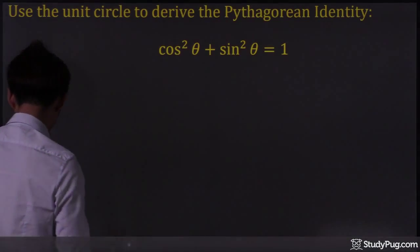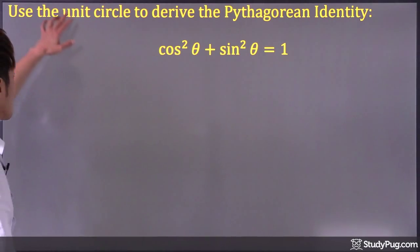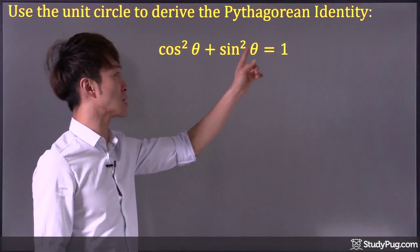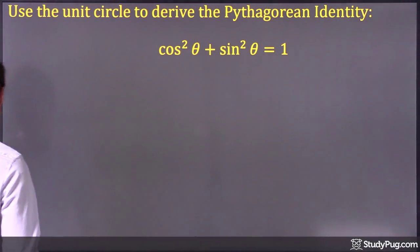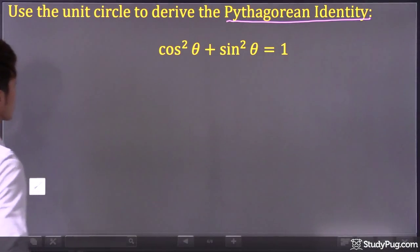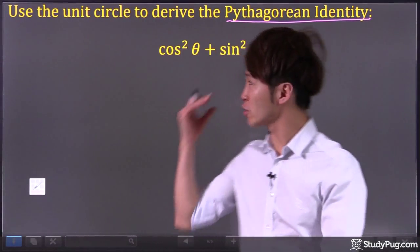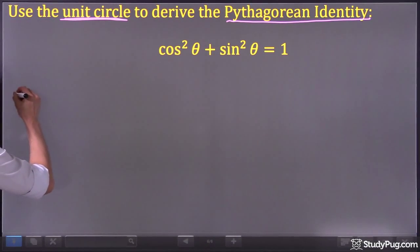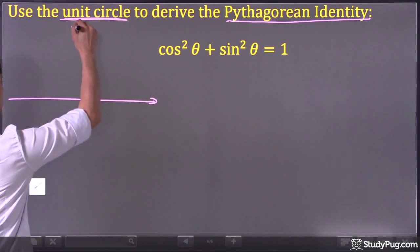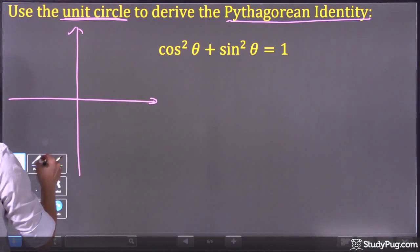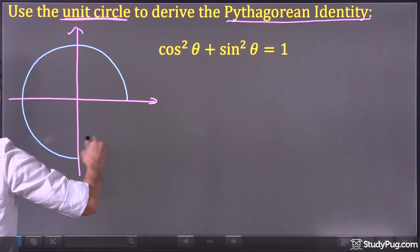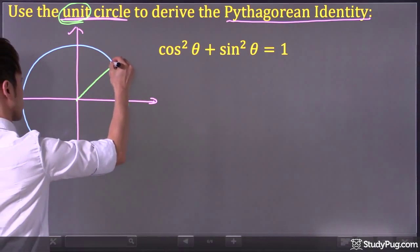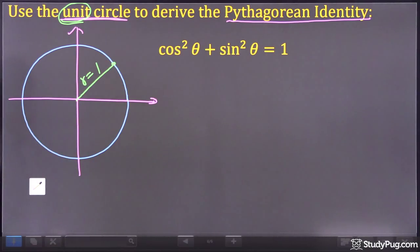In this question, we're going to use the unit circle to prove the first Pythagorean identity: cosine squared plus sine squared equals one. Remember what the unit circle is? We talked about it in the previous section. The unit circle is just a circle with a radius of one — unit means the radius must equal one.